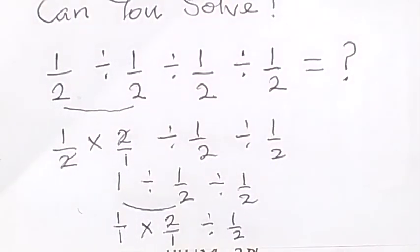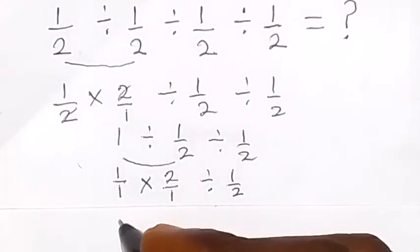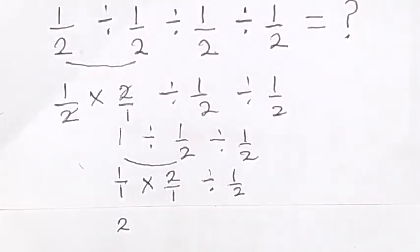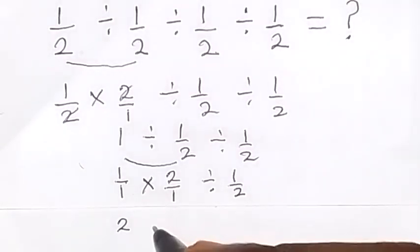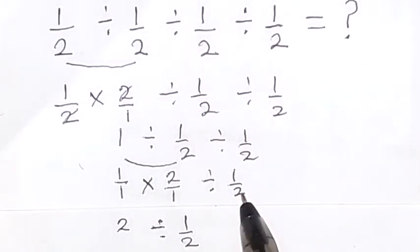Then we can say that this will be 2 left here. So we have 2 then there, divided by the half that was there, the half here now.